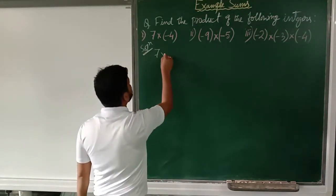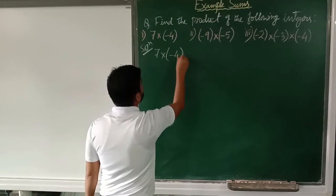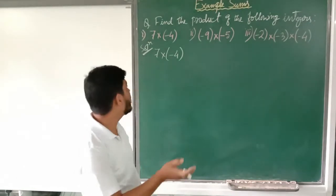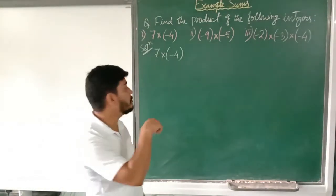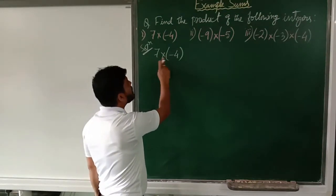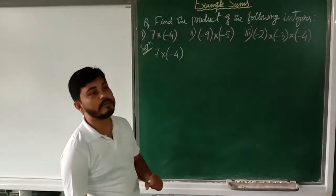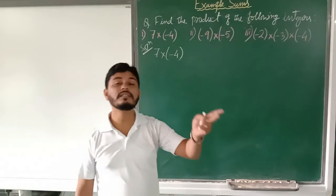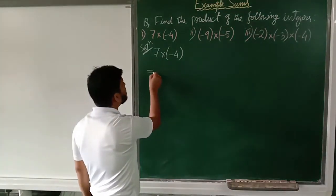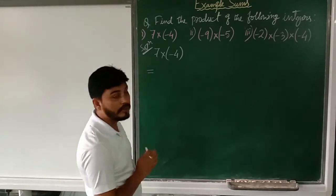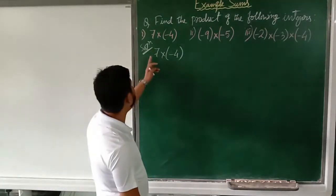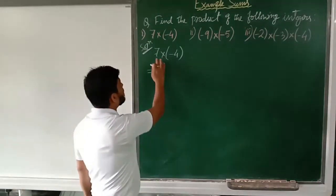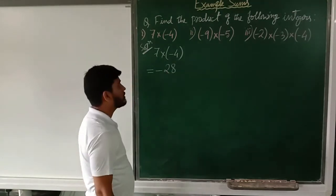The first one is 7 multiplied by minus 4. In the previous class we saw addition and subtraction of integers, but here we will multiply the numbers. Now, if you remember the sign operation table — this 7 has no sign in front of it, so no sign means it is plus. Plus into minus is minus. And 7 fours are 28, so the answer is minus 28.